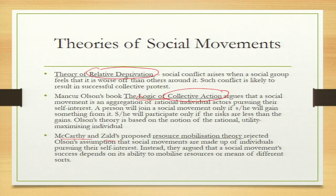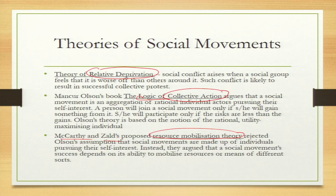The third theory came from McCarthy and Zald, who talked about resource mobilization. They rejected Olson's argument that social movements are based on individuals pursuing self-interest. Rather, McCarthy and Zald say that social movement success actually depends on its ability to mobilize resources — people are interested in mobilizing resources, and all different communities want to have more resources. These three theories — relative deprivation, logic of collective action, and resource mobilization — are the major theories of social movements, telling us why and how the study of social movements started worldwide.